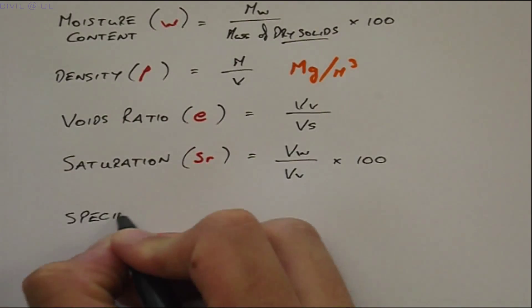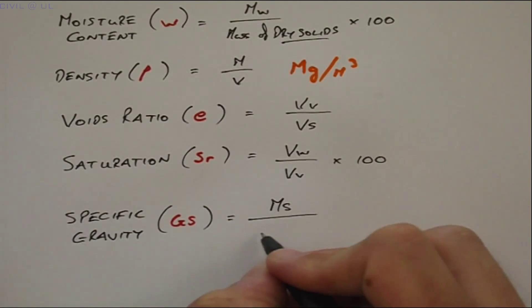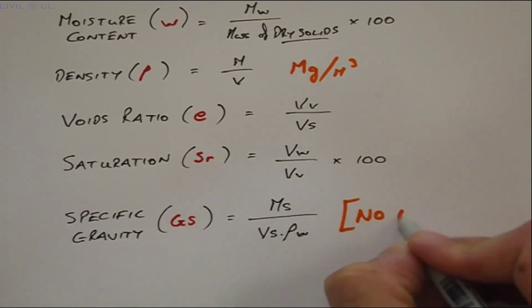And the specific gravity of a soil particle is equal to the mass of solids divided by the volume of solids multiplied by the density of water. And GS has no units.